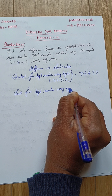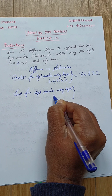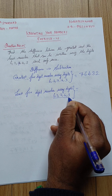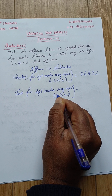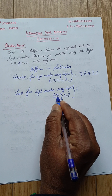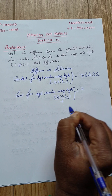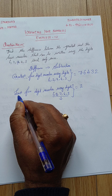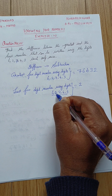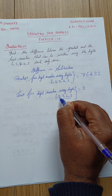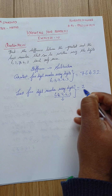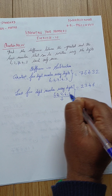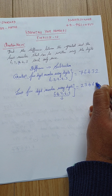Now the least five-digit number using digits 6, 2, 7, 4, 3. The smallest digit among these is 2, so we arrange from smallest to biggest: 2, then 3, then 4, then 6, then 7. So the least five-digit number is 23467.